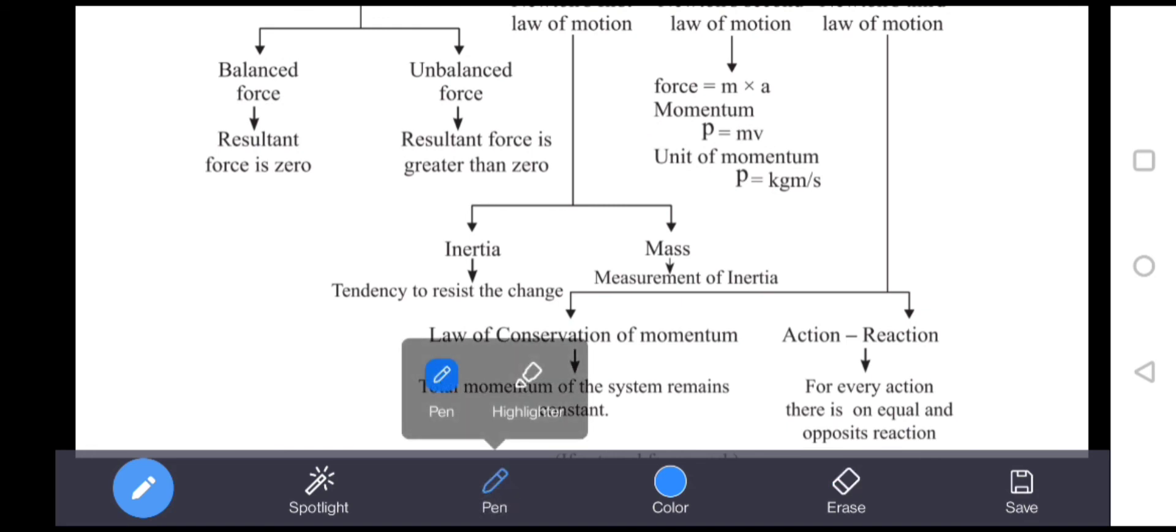The second point given by this law is the law of conservation of momentum, which states that total momentum of a system remains constant. This applies in cases of collision or recoil of a gun, which we will discuss later.